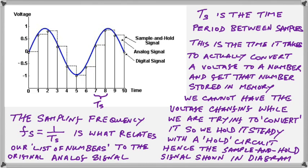Now, the sampling frequency, or the frequency at which we're taking the samples, just like any other frequency, is going to be the reciprocal of the period. So, that time period, Ts, the time to take a sample, the reciprocal of that will be the sample frequency, Fs. And this is the only thing that relates our list of numbers to the original analog signal that it represented.